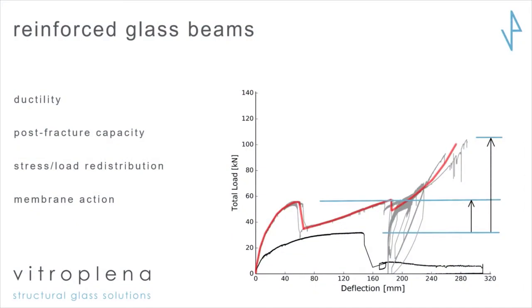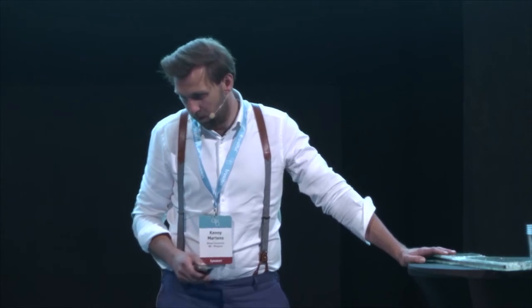Finally, we looked into membrane action. The black curve — the lower curve — is without membrane action, where we don't laterally restrain the beam at the ends, just keep them hinged. The red curve shows results with lateral restraints, and you can see we can get compressive membrane action to a pretty high level. Then the tensile reinforcement takes over and we really have catenary action, and we can go to very high loads. So there's a lot of safety and redundancy in those systems inherently.